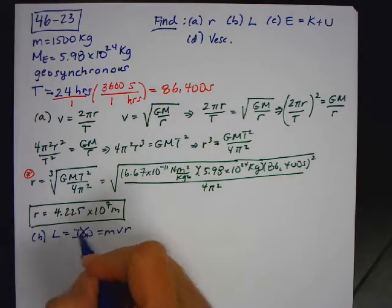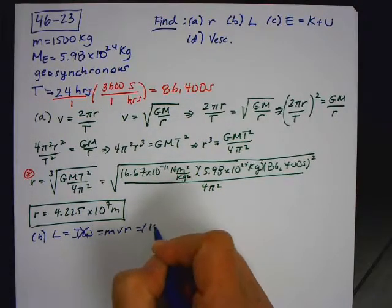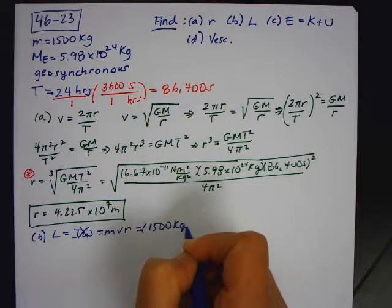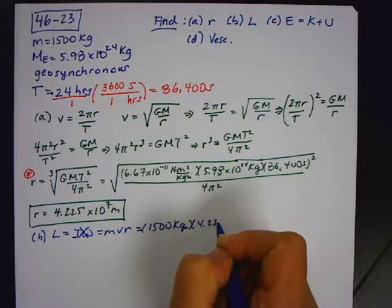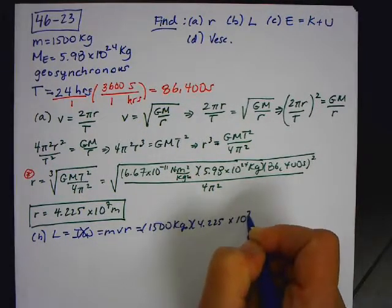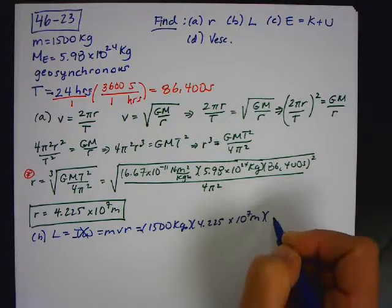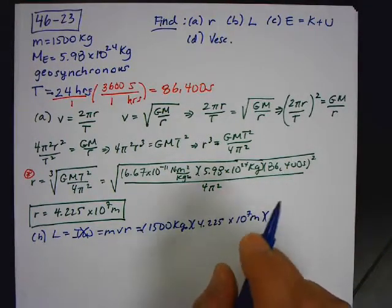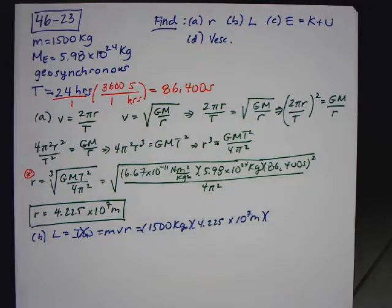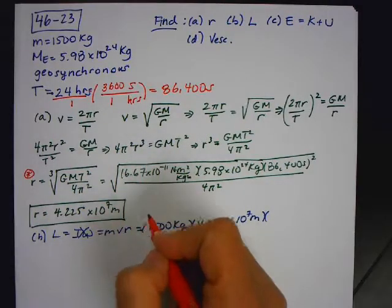So I'm not using this part. I'm just using mvR. So it's 1,500 times 4.225 times 10 to the 7 times, well, I just realized I forgot to do something. I forgot to, I don't know what V is.